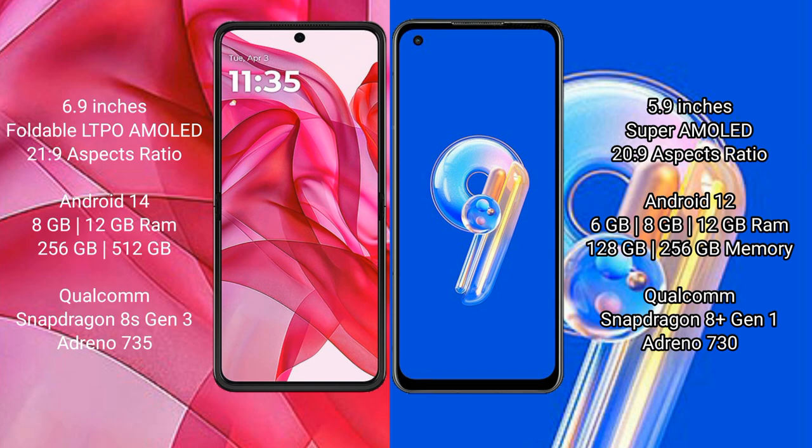Motorola Razr 50 Ultra runs on the Android 14 operating system. Asus Zenfone 9 runs on the Android 12 operating system. Motorola Razr 50 Ultra comes with 8GB and 12GB RAM and 256GB and 512GB internal storage, with a Qualcomm Snapdragon 8s Gen 3 processor and GPU Adreno 735.